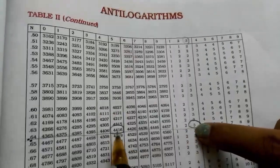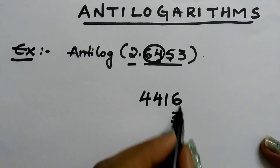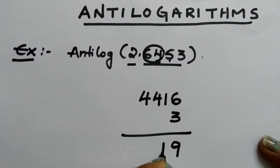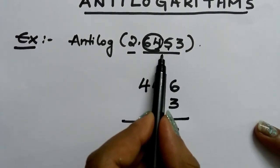Add this number 3 to this 4416. Now add this 3 to this value: 9, 1, 1, 4, 4. This is the value we got by using mantissa.